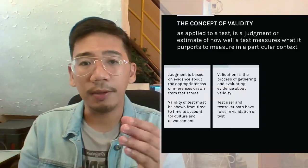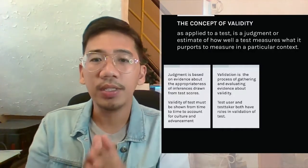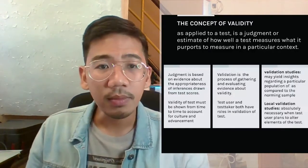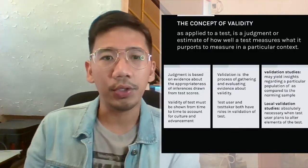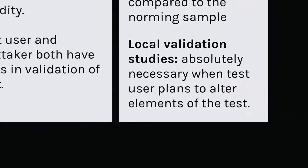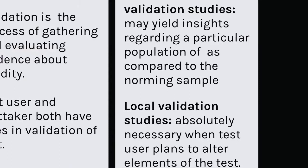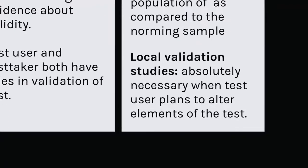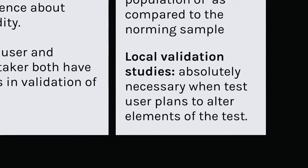Both test taker and test user have significant roles in the validation of a test. A test user might conduct a validation study, which yields results or insights regarding a particular population of test takers as compared to the norming sample. A test user might also want to conduct a local validation study when they will alter some aspects or elements of the test, including the format, instructions, language, or even the content of the test.